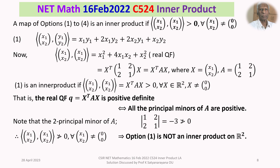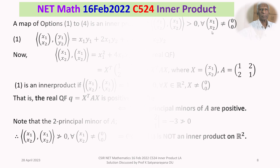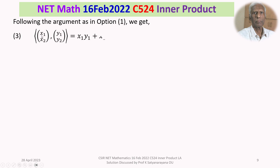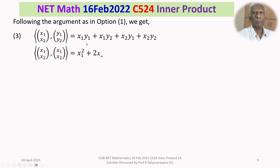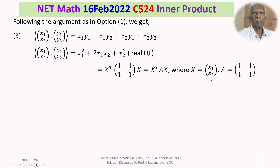Now we go to option 3. The bracket (x1, x2) comma (y1, y2) is given to be x1·y1 plus x1·y2 plus x2·y1 plus x2·y2. Bracket(x1, x2) with itself is x1² plus 2·x1·x2 plus x2². The real symmetric matrix A is [1, 1; 1, 1]. In this case, the two principal minor — the determinant — is 0, which is not greater than 0. So option 3 is not an inner product.